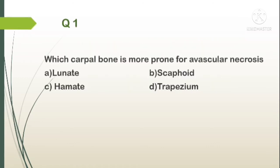Question number 1. Which carpal bone is more prone for avascular necrosis? A. Lunate, B. Scaphoid, C. Hamate, D. Trapezium. Answer: B. Scaphoid — it is more prone for avascular necrosis.